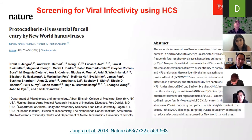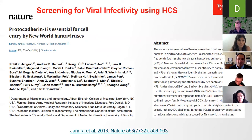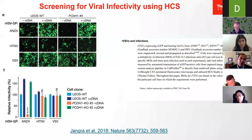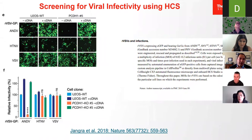Dr. Karthik Chandran's lab at Albert Einstein College of Medicine was a pretty productive lab in this field. They went on to show viral infectivity using HCS — a 2018 Nature paper — showing very high correlation in U2OS cells with or without a cDNA knockout. They were able to show that not only could you apply the technology to a different virus, they could also look at GFP-positive cells and show different conditions of infectivity using the virus.